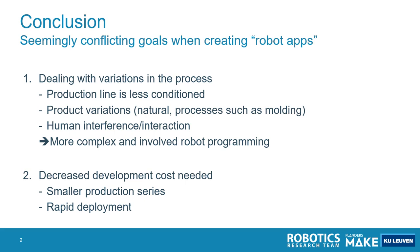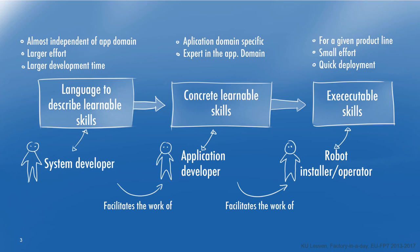The resolution of these seemingly conflicting goals lies, I think, in a better definition of different stakeholder roles that are involved in the software development for robot applications. We attempt to achieve these goals by splitting up the development into three roles: a system developer, an application developer, and a robot installer slash operator.